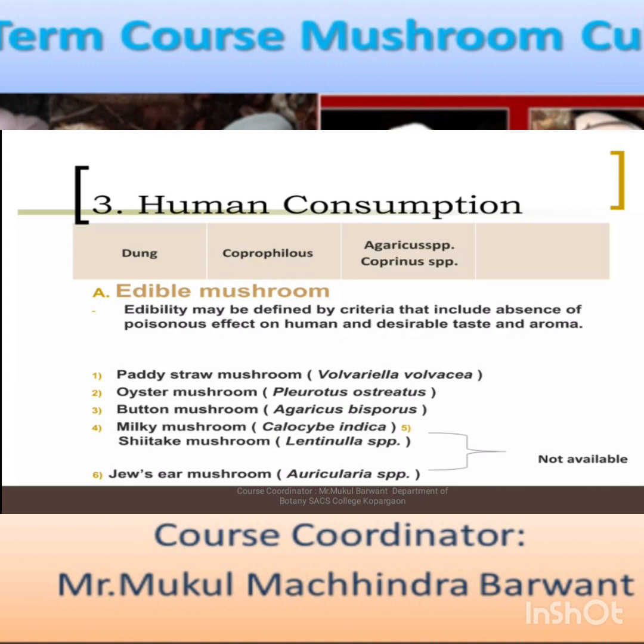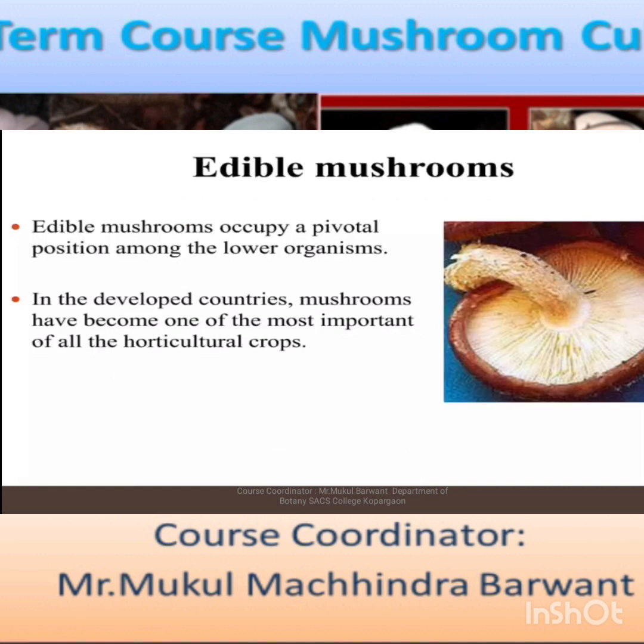Edible may be defined by criteria that include the absence of poisonous effect, desirable taste, and aroma. For example, paddy straw mushroom, oyster mushroom, button mushroom, milky mushroom, shiitake mushroom, and oyster mushrooms — these are all considered edible mushrooms.